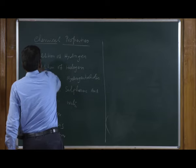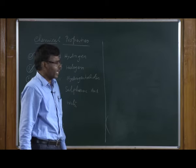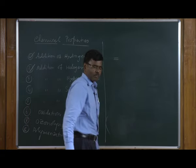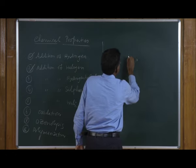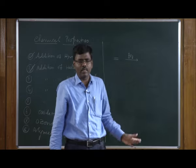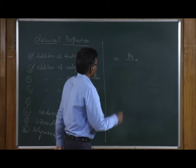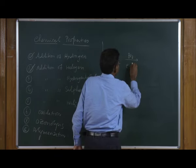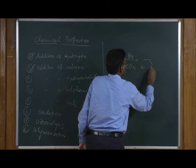The next reaction is addition of halogens — electrophilic addition reactions. For example, with ethylene: iodine does not undergo addition with alkenes under normal conditions. However, bromine readily undergoes reaction in CCl₄ and undergoes addition to give the vicinal dibromo compound.